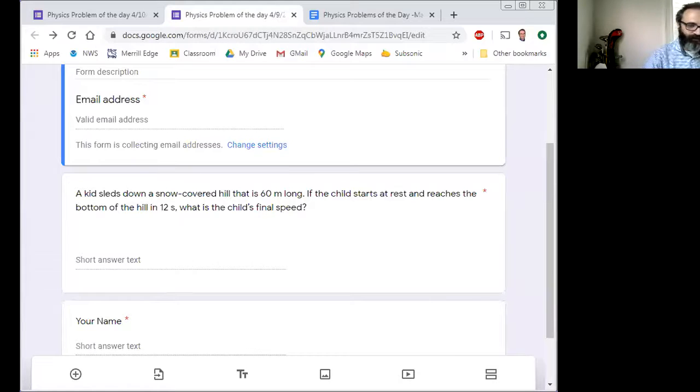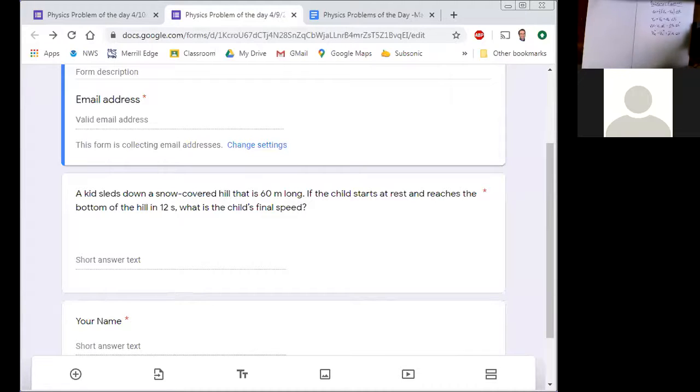Let's start with what we have for givens. What do we have for the givens? Anybody got the distance? Yeah, we've got the distance. What symbol do I use for distance? Good, so I have Δx equals 60 meters. That's one of the givens.